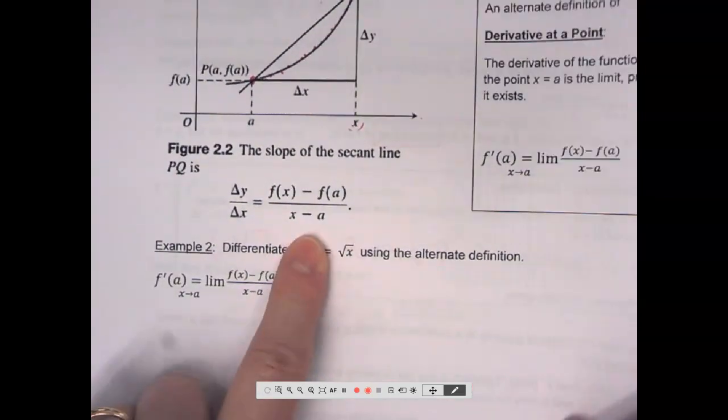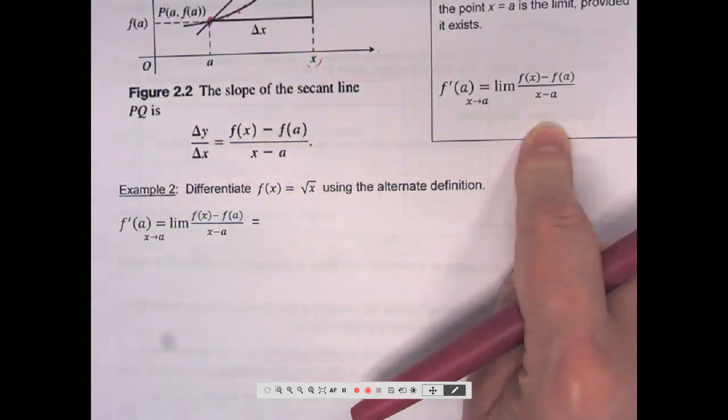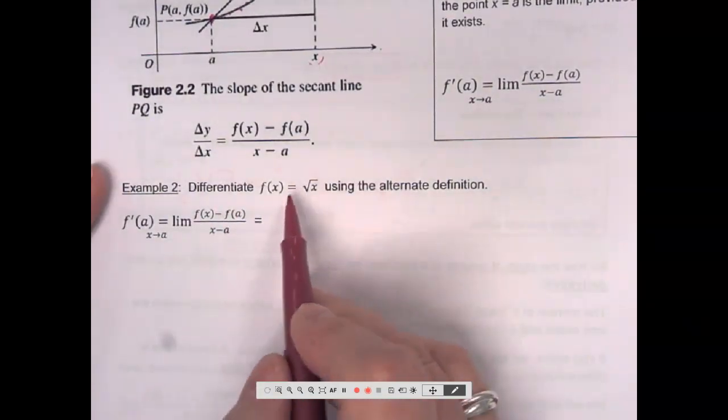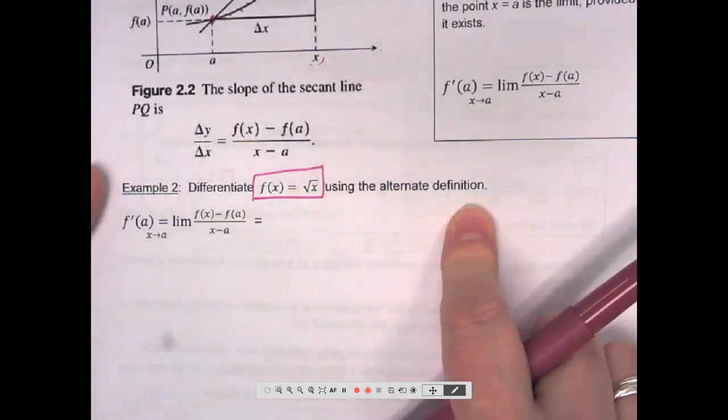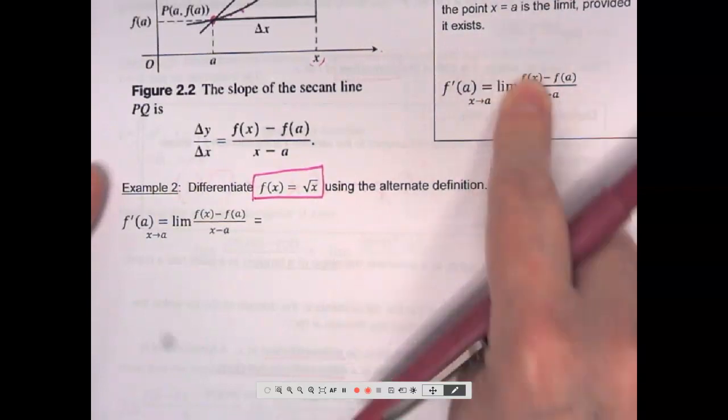It is the same thing as what we've been using. It's just using different variables. So, there are many different ways that this formula can appear, but it's all representing the same exact thing. Whether X is approaching A or H is approaching zero, it's all the same concept. The two points are getting closer and closer and closer so that the secant is becoming closer to a tangent. So, if I use this formula, we're going to use this formula, it's fine. We'll adapt to those variables, but it's all the same exact process. So, we're going to differentiate this function here using the alternate definition.